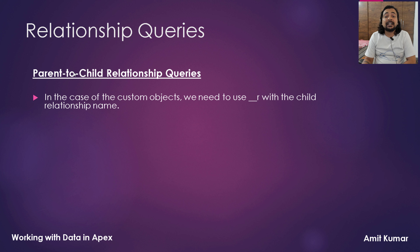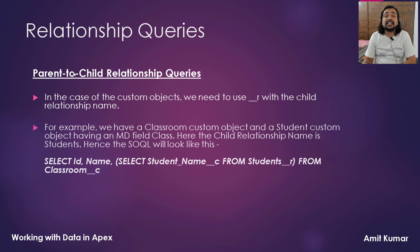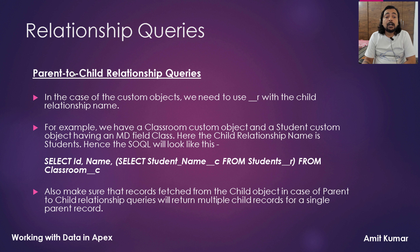In the case of a custom object, we need to use __r with the child relationship name. For example, we have a Classroom custom object and a Student custom object having a master detail field Class. Here the child relationship name is Students, so in the sub query you use Students__r. Also make sure that records fetched from the child object in a parent to child relationship query will return multiple child records for a single parent record.